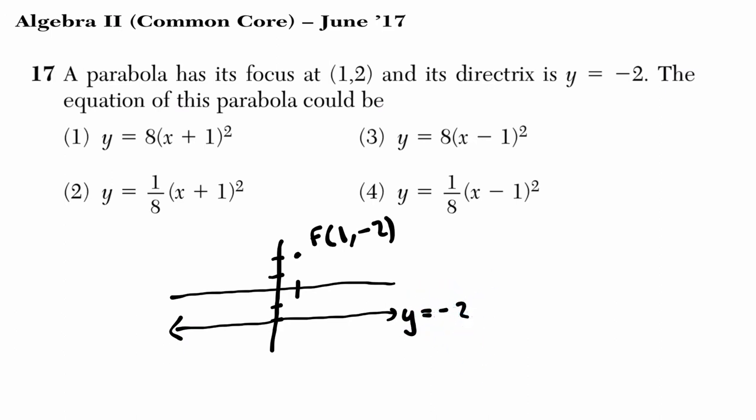And all we need to know is the vertex is halfway between these two. That would be at (1,0). You can just count that, right? It's 2 below the focus, 2 above the directrix, right in the middle at 0. And there's some parabola like this, opening away from the directrix and surrounding the focus.